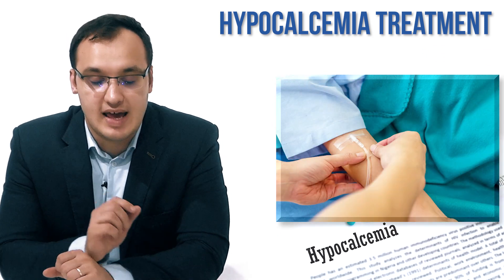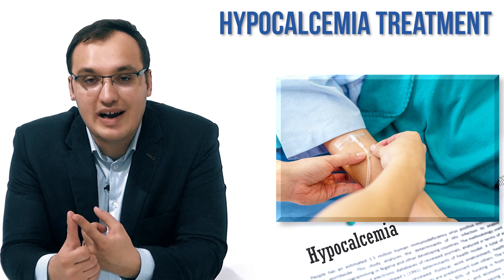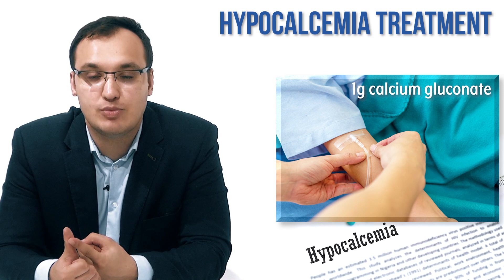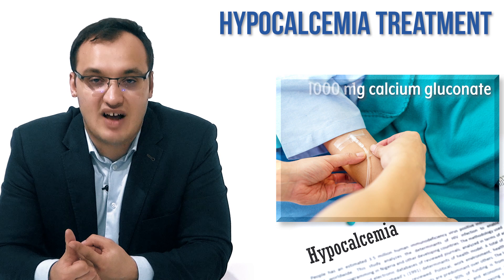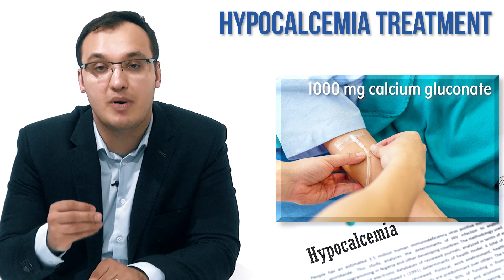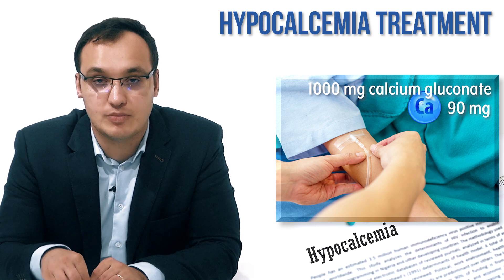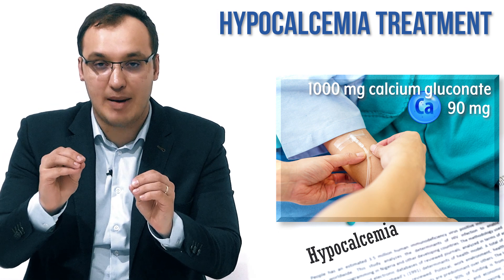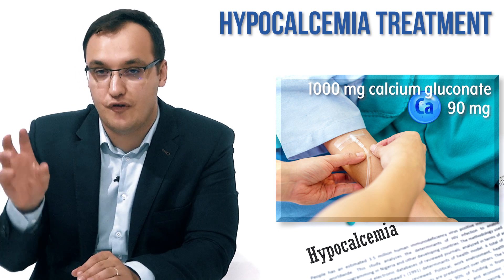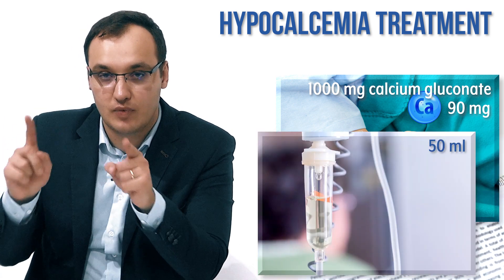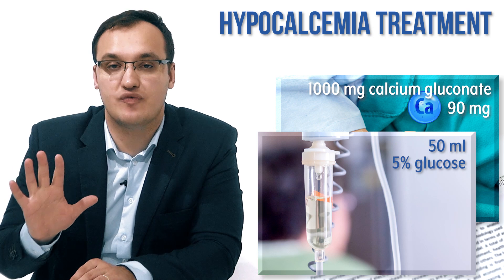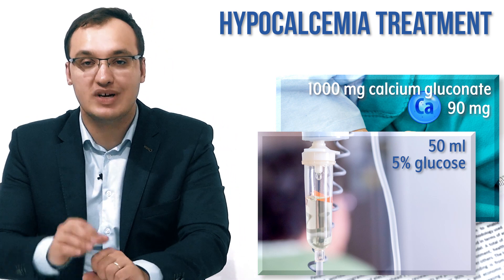For intravenous infusion, we give something else: 1 gram of calcium gluconate, not calcium carbonate. So the difference is: intravenously you give calcium gluconate. 1,000 milligram of calcium gluconate does not mean we give 1,000 milligram of elemental calcium — it only contains 90 milligram of elemental calcium. We put 1 gram of calcium gluconate (90 mg elemental calcium) into 50 milliliter of 5% dextrose solution and give it over 10 minutes.